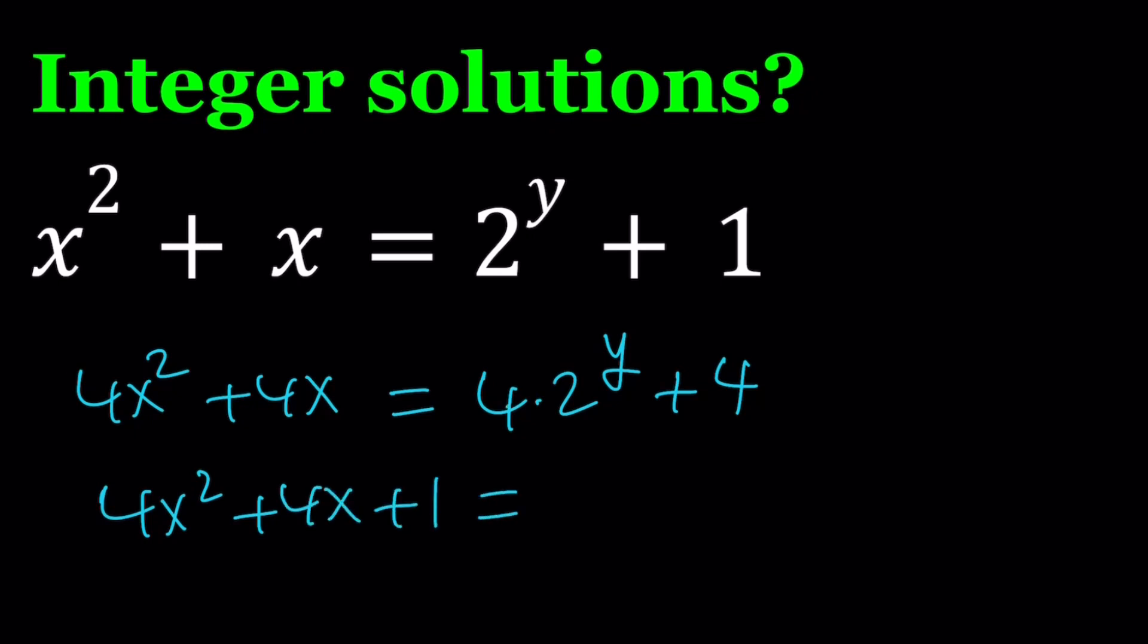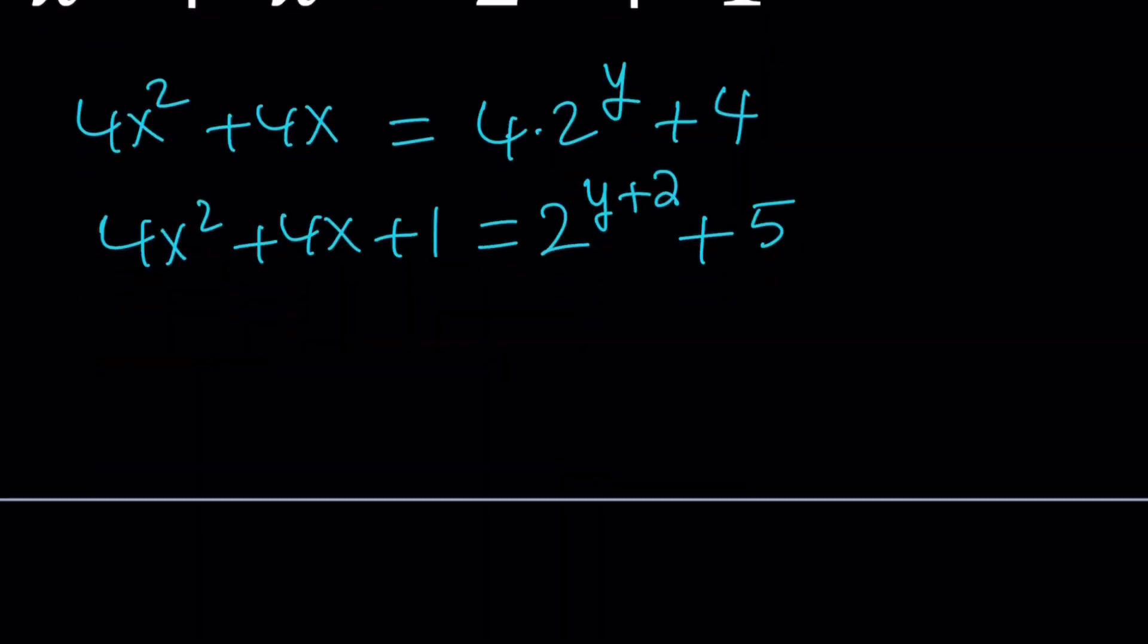And we can actually write this as 2 to the power 2, so it's going to be 2 to the power y plus 2, plus 4 plus 1 is going to be plus 5. Now, how is this going to be helpful? 2x plus 1 squared equals 2 to the power y plus 2 plus 5.